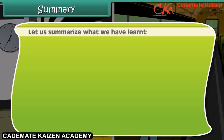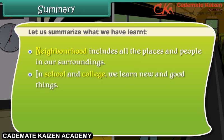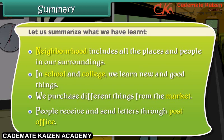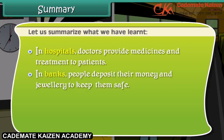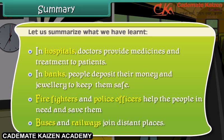Let's summarize what we have learned. Neighborhood includes all the places and people in our surroundings. In schools and colleges, we learn new and good things. We purchase different things from the market. People receive and send letters through the post office. In hospitals, doctors provide medicines and treatment to patients. In banks, people deposit their money and jewelry to keep them safe. Firefighters and police officers help the people in need and save them. Buses and railways join distant places.